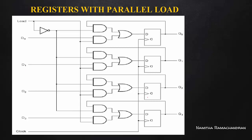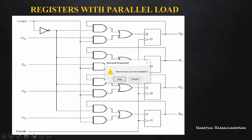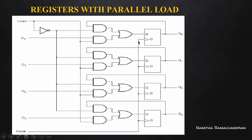Here we have four D flip-flops. We have marked the output here. We don't connect the D input directly here — we don't connect the external input directly here — so we can load it in parallel. We have four inputs: D0, D1, D2, D3. We have two operations: we need to load and output. So if you want to load or keep the value, we will decide the two things we need to do.